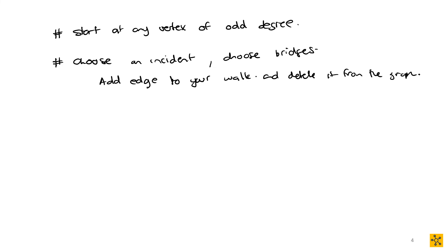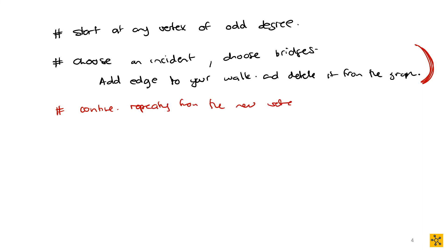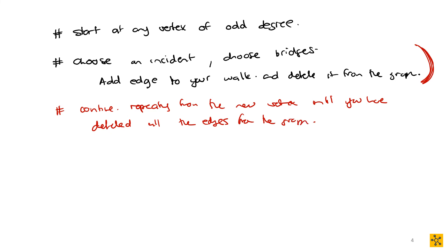You delete each chosen edge from the graph and continue repeating from the new vertex until you have deleted all the edges from the graph. At that point you'll have your Eulerian walk.